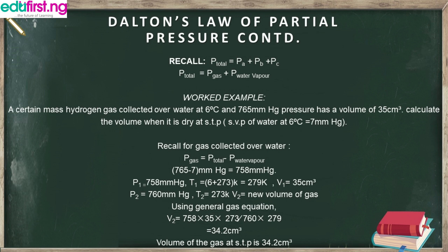Since the question ends with 'at STP,' the STP values become our P₂ and T₂. So P₂ equals 760 mmHg and T₂ equals 273 K. Using the General Gas Equation and making V₂ the subject, we insert our figures: 758 × 35 × 273 divided by 760 divided by 279, which gives us 34.2 cm³. The volume of the gas at STP is 34.2 cm³.